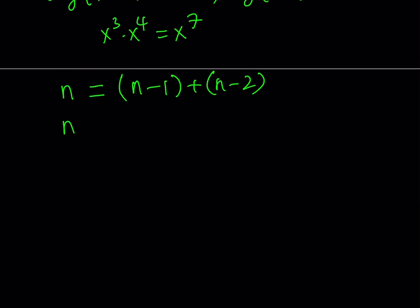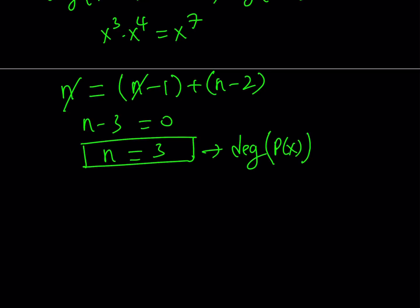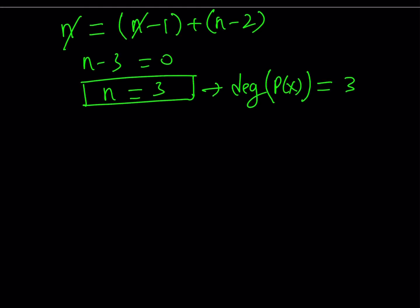Let's go ahead and solve this equation for n. This gives us n-3 = 0, which means n is equal to 3. But remember n is the degree of P(x), so we now know that the degree of P(x) is equal to 3. In other words, P(x) is a cubic polynomial.